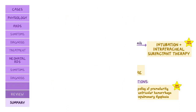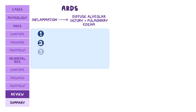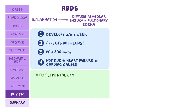As a quick recap: acute respiratory distress syndrome happens when inflammation causes diffuse alveolar injury and pulmonary edema. The four criteria of ARDS are: it develops within a week, affects both lungs, causes the PF ratio to dip below 300 mmHg, and is not due to heart failure or other cardiac causes. Treatment includes supplemental oxygen and mechanical ventilation.